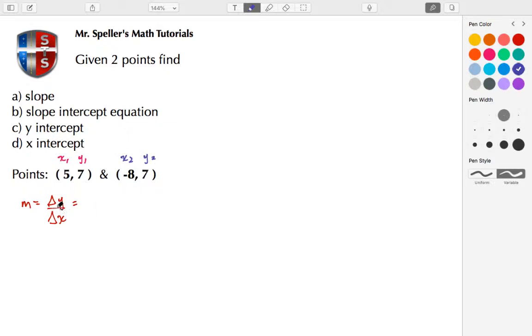Well, ΔY can be shown as Y₁ minus Y₂, and that quantity is divided by X₁ minus X₂. In this particular example, Y₁ is 7 and Y₂ is also 7, so I'm doing 7 minus 7. And for my denominator, X₁